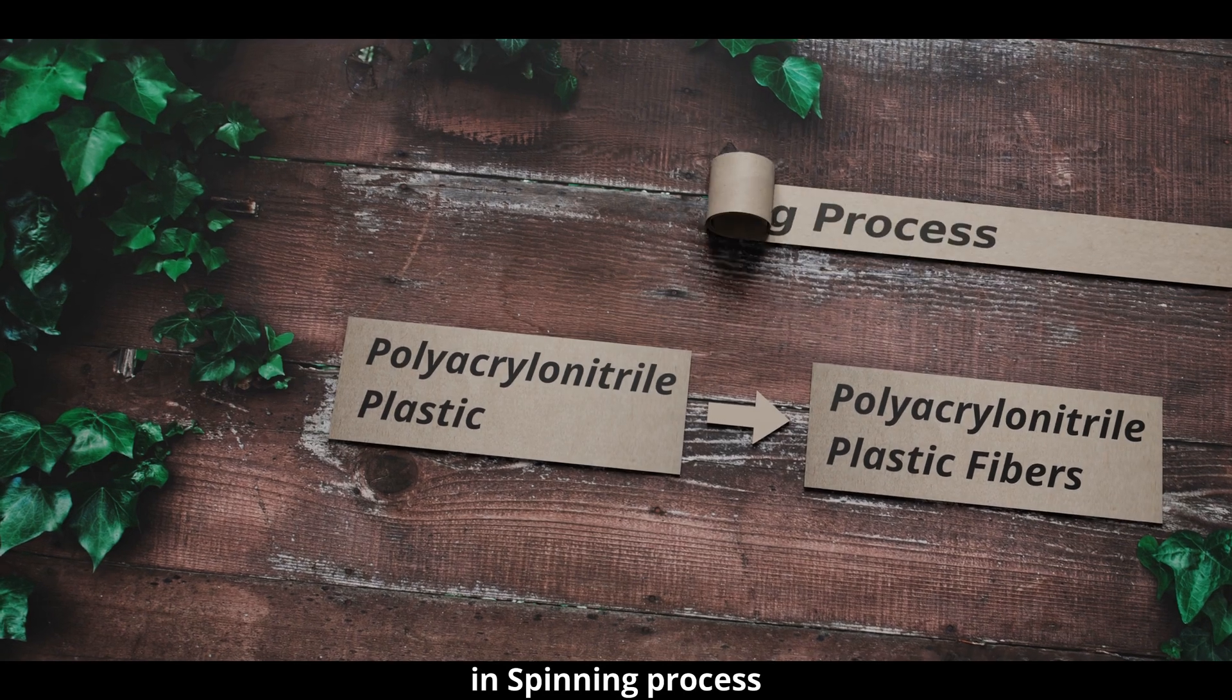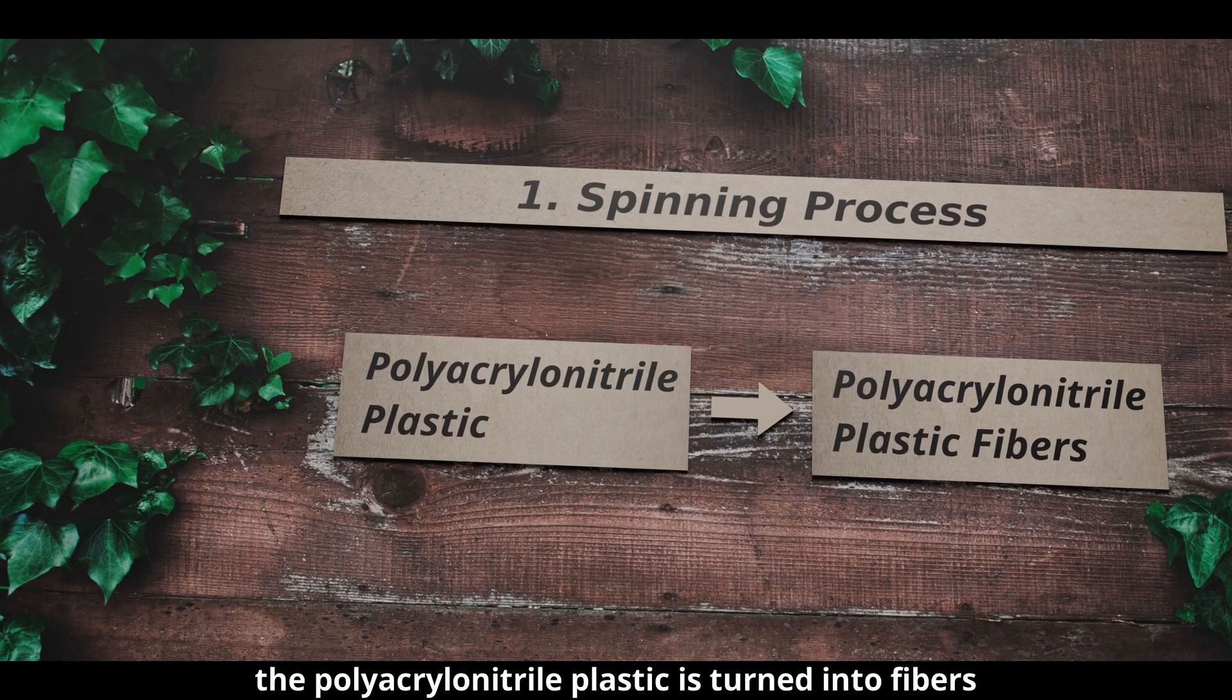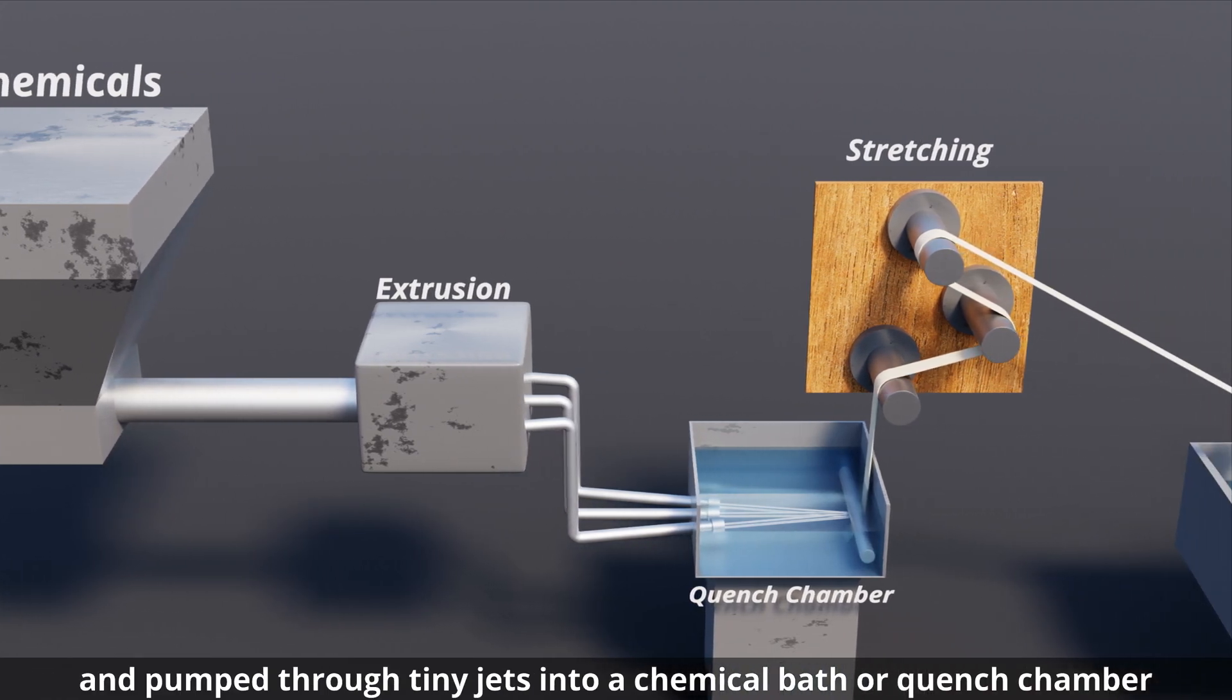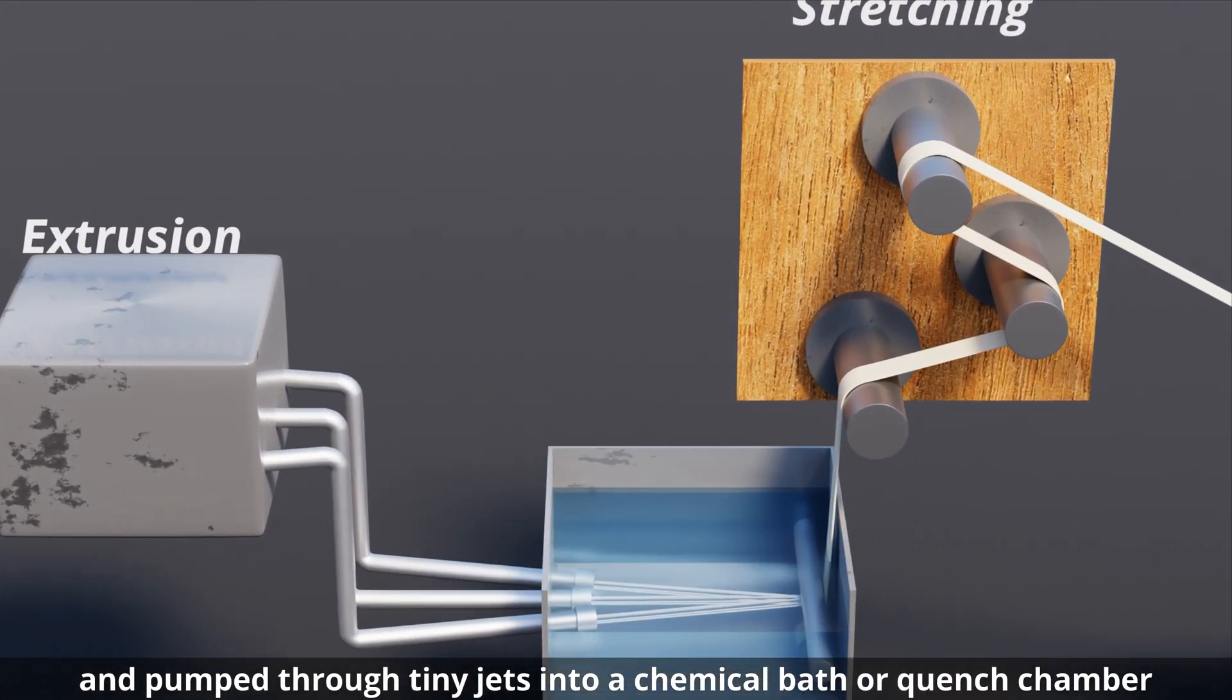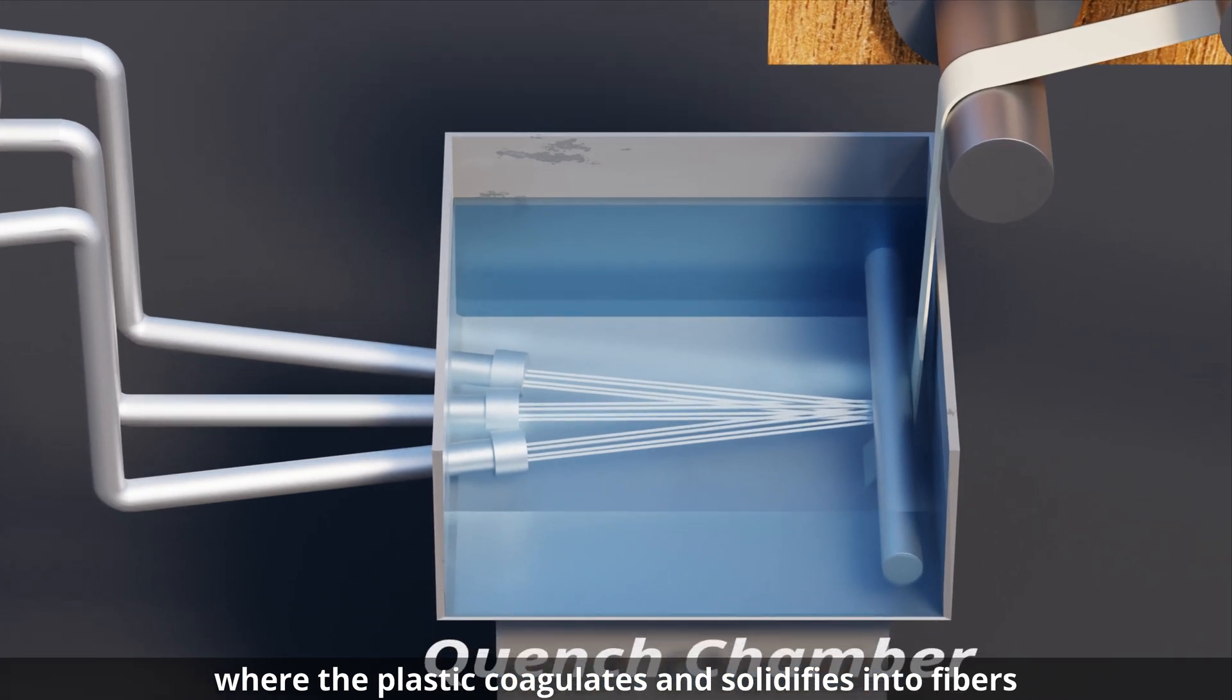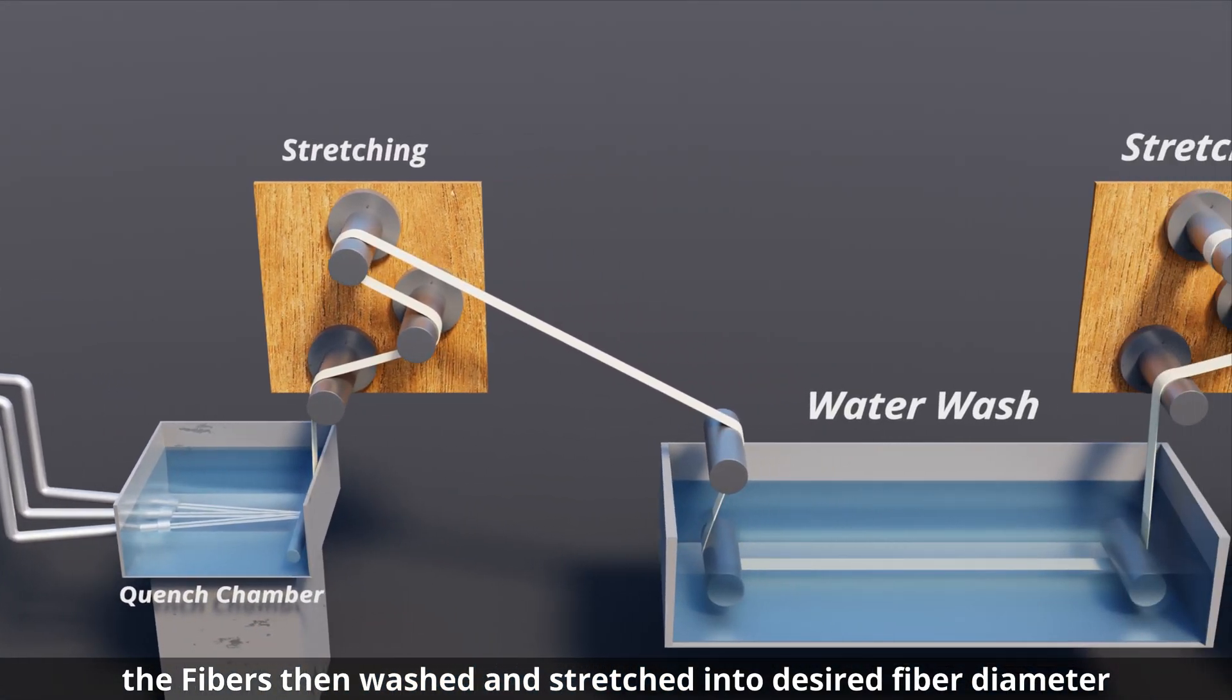In the spinning process, the polyacrylonitrile plastic is turned into fibers. The plastic is mixed with certain chemicals and pumped through tiny jets into a chemical bath or quench chamber where the plastic coagulates and solidifies into fibers. The fibers are then washed and stretched into the desired fiber diameter.